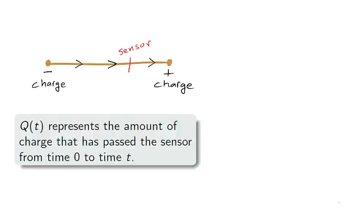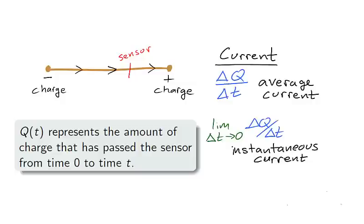Similarly, given a charged wire with an excess of electrons on the left and a deficit of electrons on the right, we can measure the amount of charge that has passed a sensor from time 0 to time t. q of t is the flow of charge, just as w of t was the flow of the water.